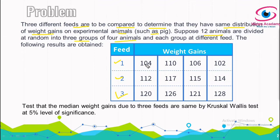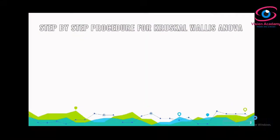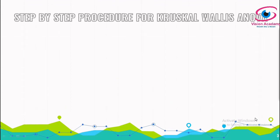In each feed we have four animals. For all three feeds we have four animals each, and their results are given. We want to test whether the median weight gains due to three feeds are the same. Using the Kruskal-Wallis test at a five percent level of significance, we have to determine whether the three feeds' weight gains are the same. Totally we have 12 samples and three groups, that is K equals 3.